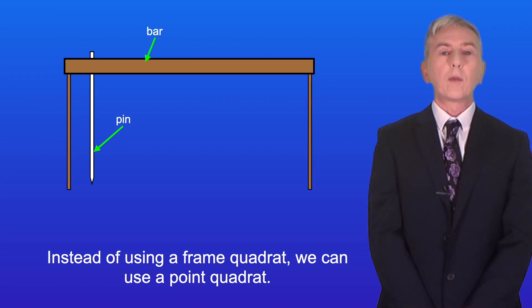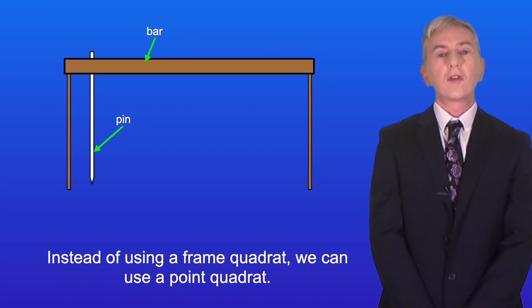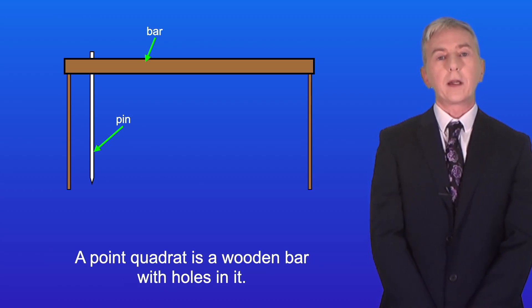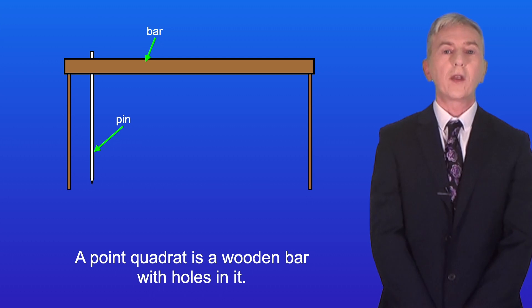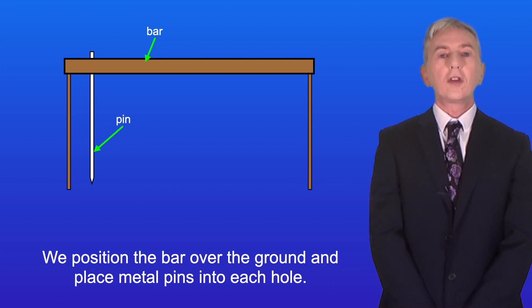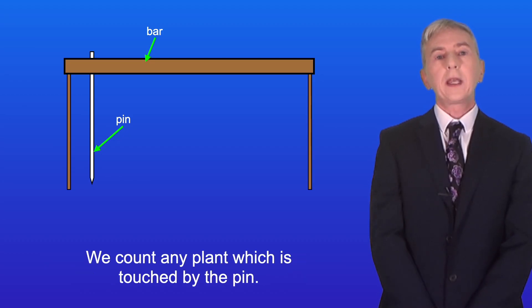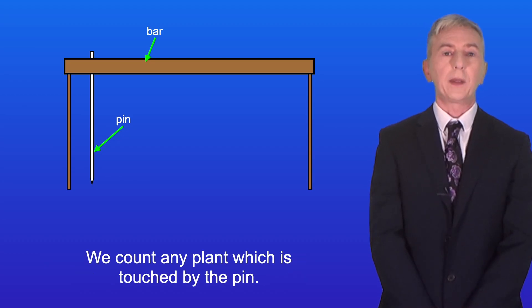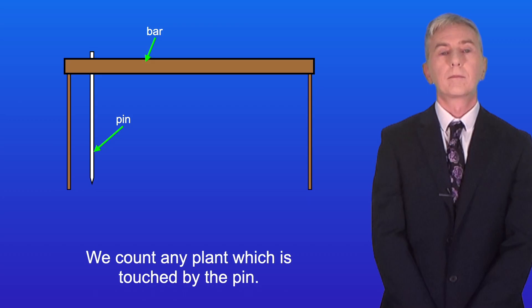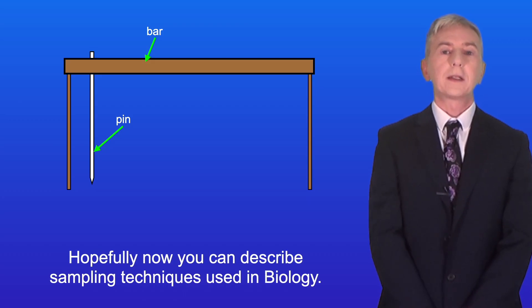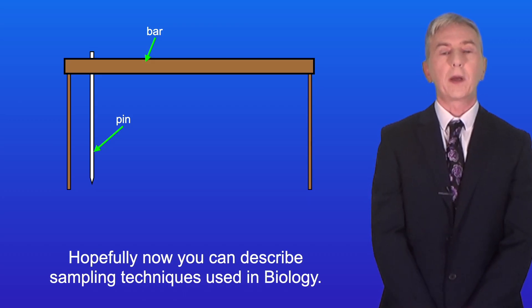Now instead of using a frame quadrat, we can use a point quadrat. A point quadrat is a wooden bar with holes in it. We position the bar over the ground and place metal pins into each hole. We count any plant which is touched by the pin. So hopefully now you can describe sampling techniques used in biology.